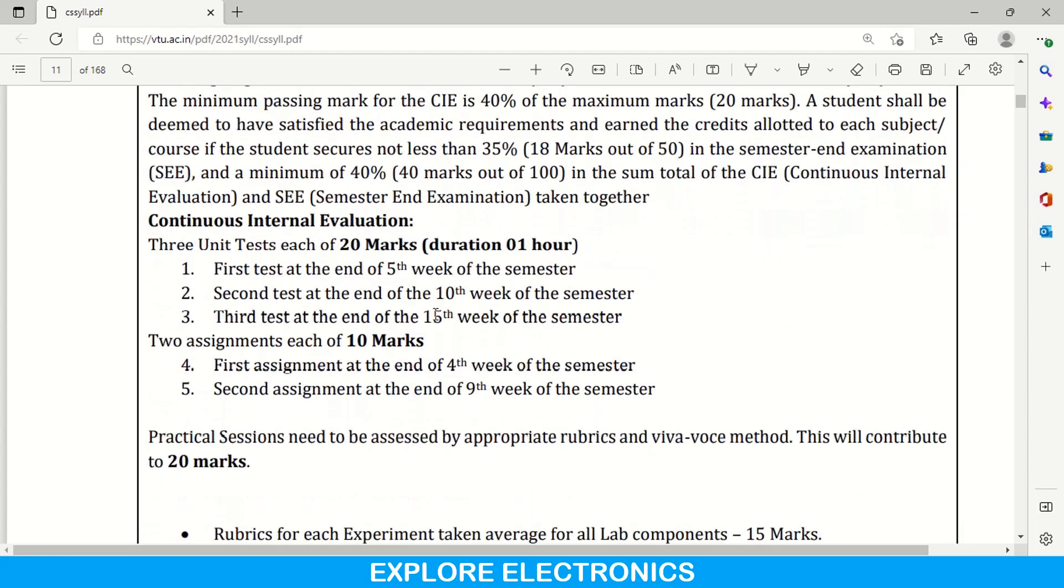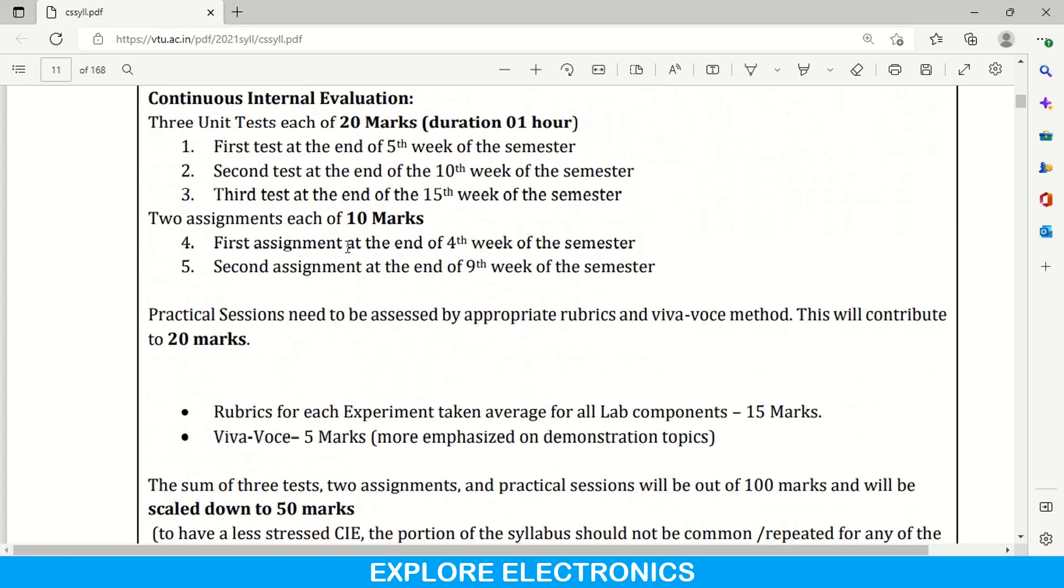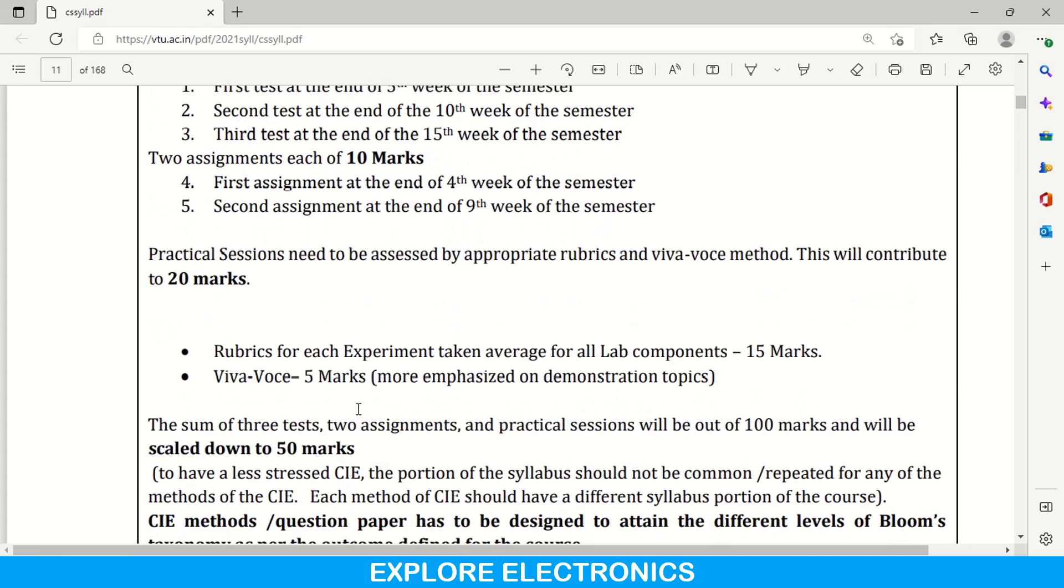And again coming to CIE and SCE, CIE for theory part, you will be having three tests for 20 marks, duration will be one hour. And these tests are going to be conducted 5th week of the semester, 10th week and 15th week. And two assignments will be given for 10 marks. And practical sessions need to be assessed by appropriate rubrics and YYY method. It will give you 20 marks. So, total is CIE for 50 marks that will be split into 30 for theory and 20 for practical. And each experiment will be conducted in lab for 15 marks they will be evaluated your record and the lab experiment conduction and 5 marks will be for VIVA. And totally these two will be consolidated scaled down to 50 marks as a CIE marks. This is about how CIE will be conducted and splitting up of practical and theory.